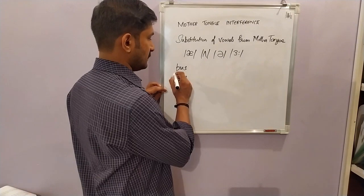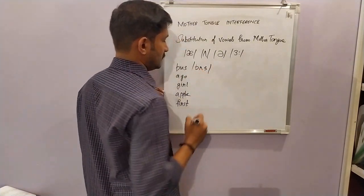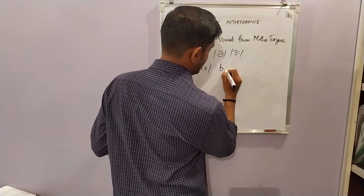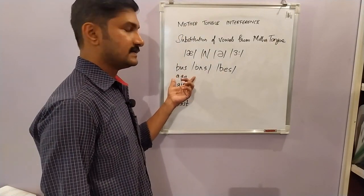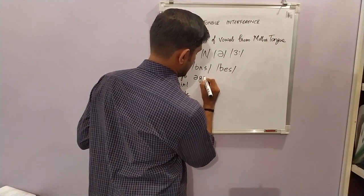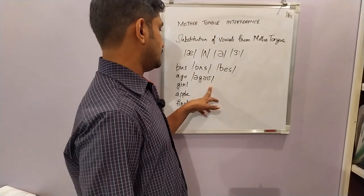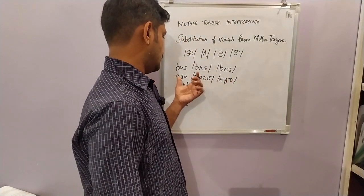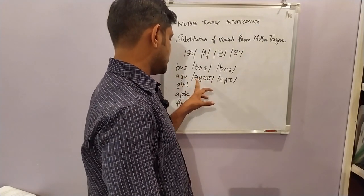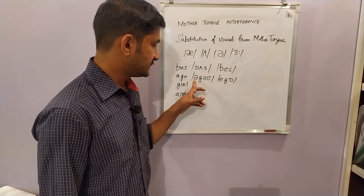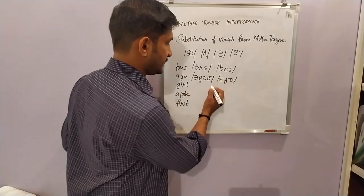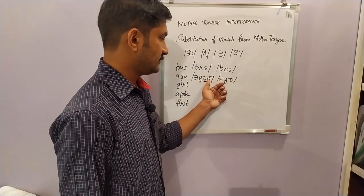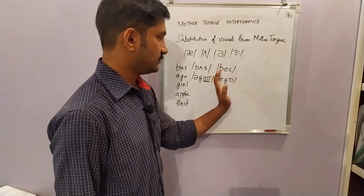Take 'bus' — we have a tendency to pronounce it as 'bes'. This one is 'ago'. The Indian learners pronounce this word with mispronunciation at two levels. The first is the 'a' sound — this is not a familiar sound in our mother tongue, so we tend to replace this 'a' with a different 'a'. The second problem is we try to reduce the diphthong sound into a monophthong — instead of 'a', we replace it with 'o'. So we tend to mispronounce this word as 'ago'.